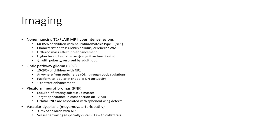Plexiform neurofibromatosis presents as a globular infiltrating soft tissue mass. A target appearance is seen in cross section on T2 imaging. Orbital plexiform neurofibromas are associated with sphenoid wing defects.